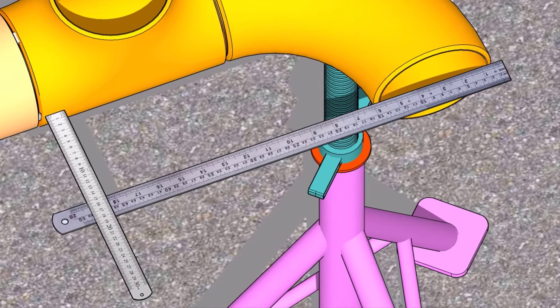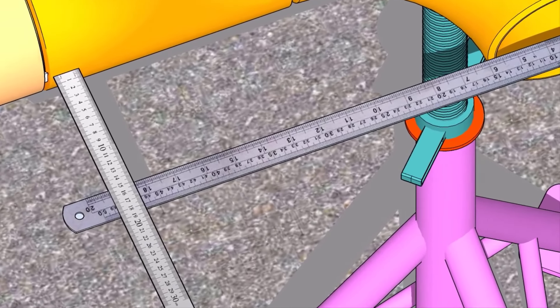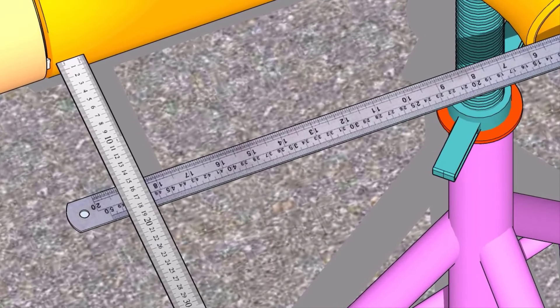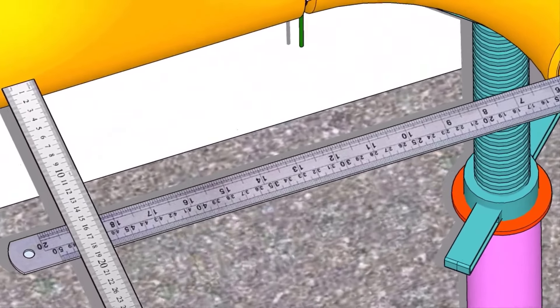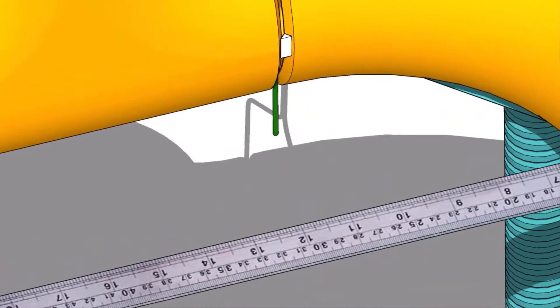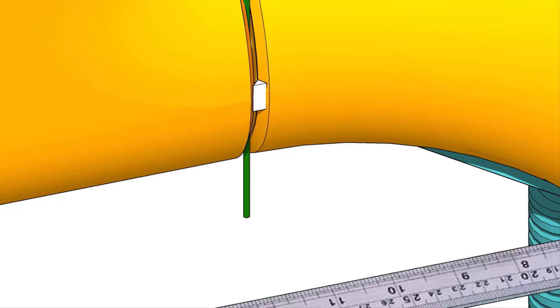If necessary, turn the elbow as required, and maintain both the measurements equal. Tack weld on both sides of the elbow.